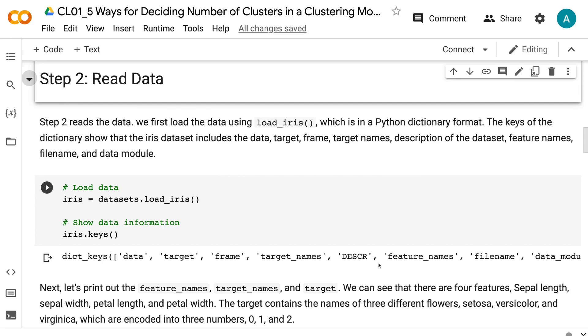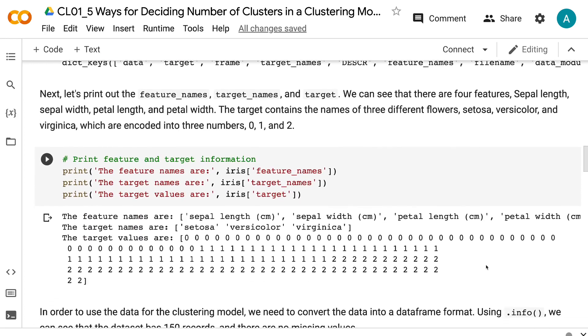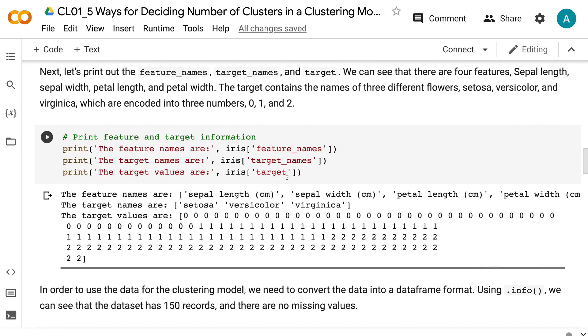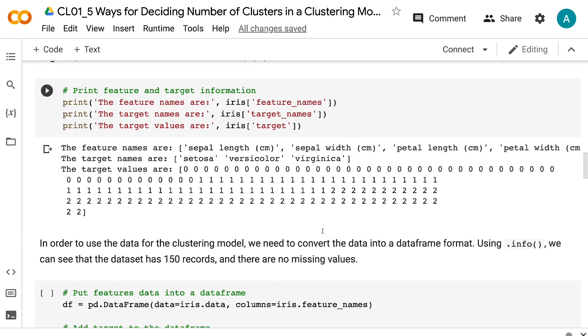Next, let's print out the feature names, target names, and target. We can see that there are four features: sepal length, sepal width, petal length, and petal width. The target contains the names of three different flowers: setosa, versicolor, and virginica, which are encoded into three numbers: 0, 1, and 2.